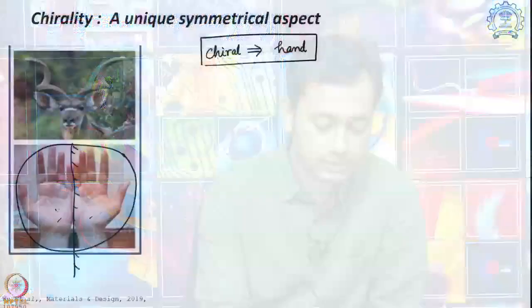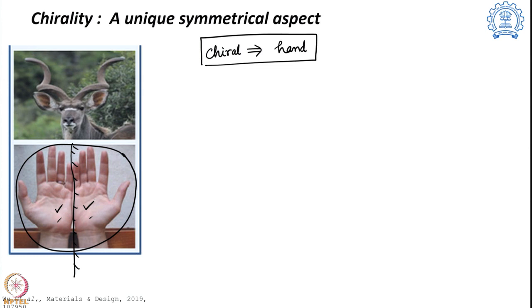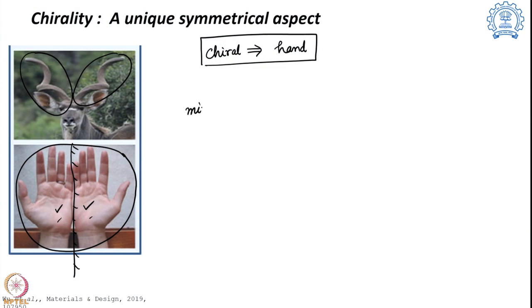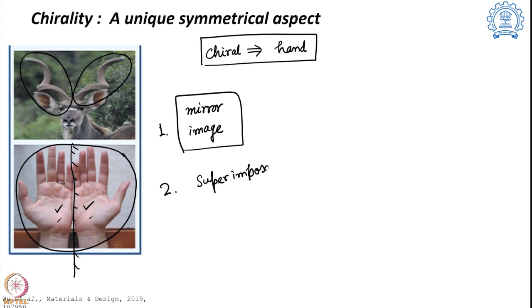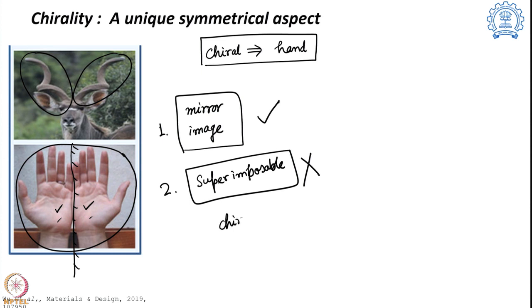This particular system is known as a chiral system — I have a mirror image of each other, but they are not superimposable. The horns of this deer show the same thing — they are mirror images but if you want to put them on top of each other, they do not fit. Chirality means mirror image of each other, but they are not superimposable. If both criteria are maintained, you can say you have a chiral system.